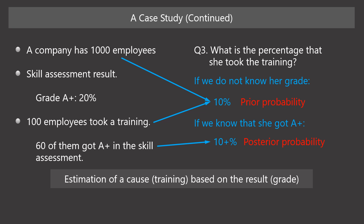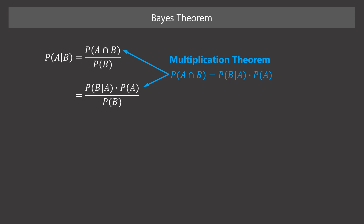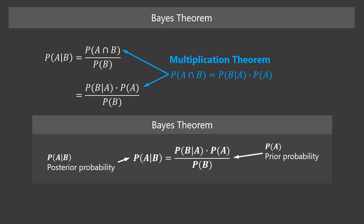In this way, we sometimes estimate an event's probability subjectively. And as we obtain additional information, we revise our subjective estimation accordingly. The case and questions are an illustration of Bayes' theorem. Suppose event A occurs on the condition that event B occurs. We can express the conditional probability of A given B by this equation. By using the multiplication theorem, we can rewrite the numerator of this fraction in this way, and we get this equation. This equation is called Bayes' theorem.